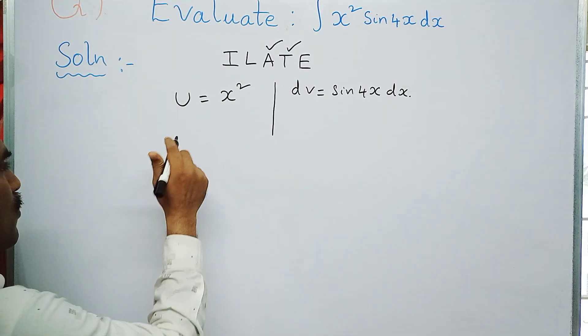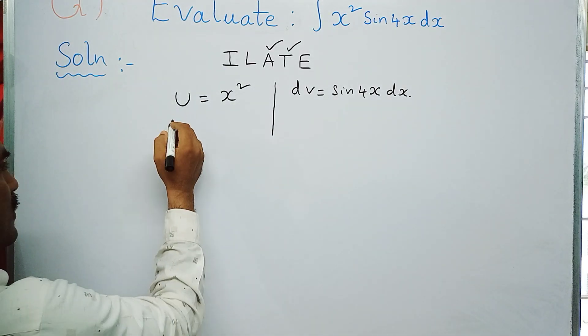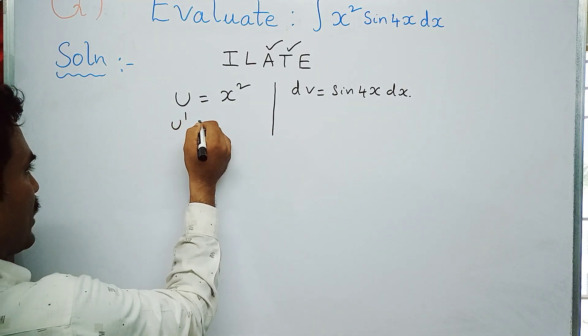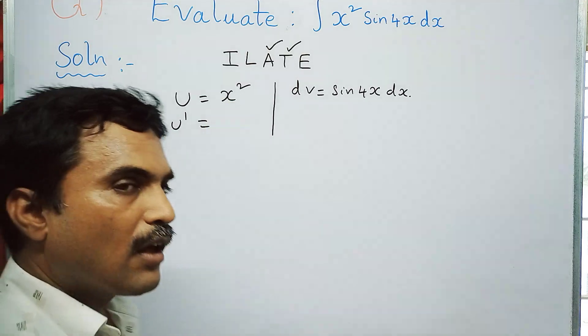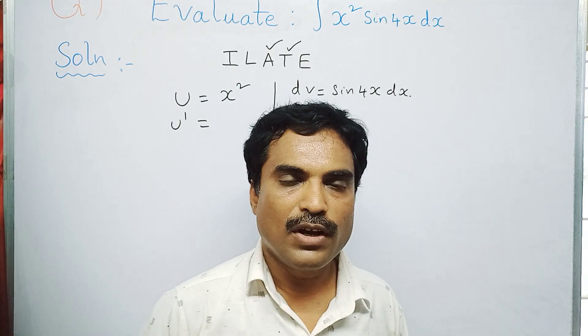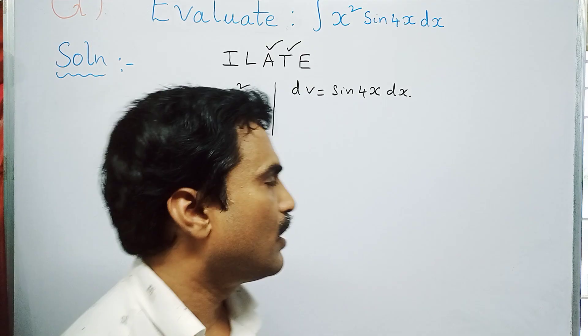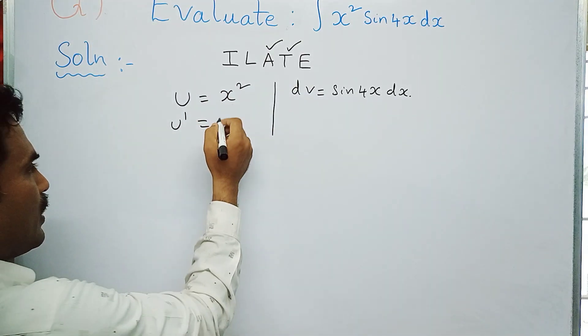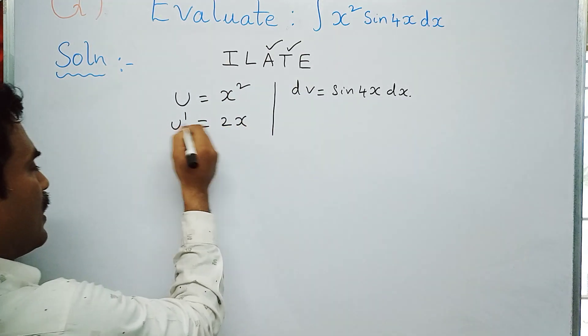So first differentiate on both sides. That means du by dx, that is equal to u dash. Now d by dx of x square—apply that d by dx of x power n formula, that is n into x power n minus 1. So here n value is 2, so you get 2x.